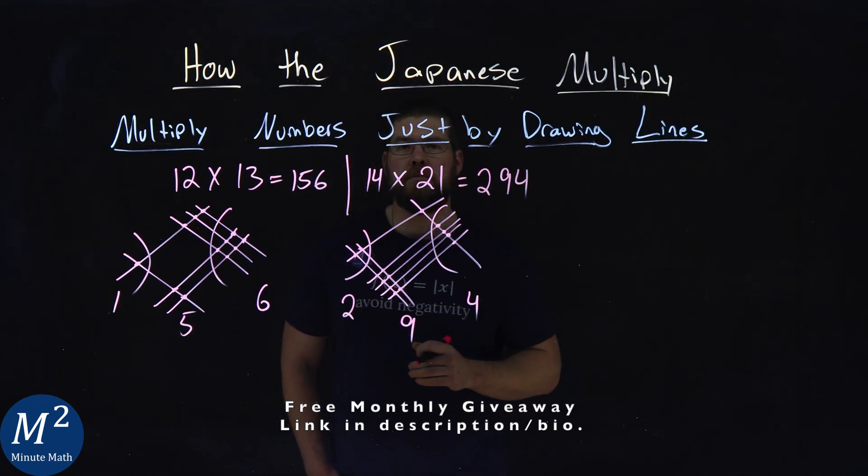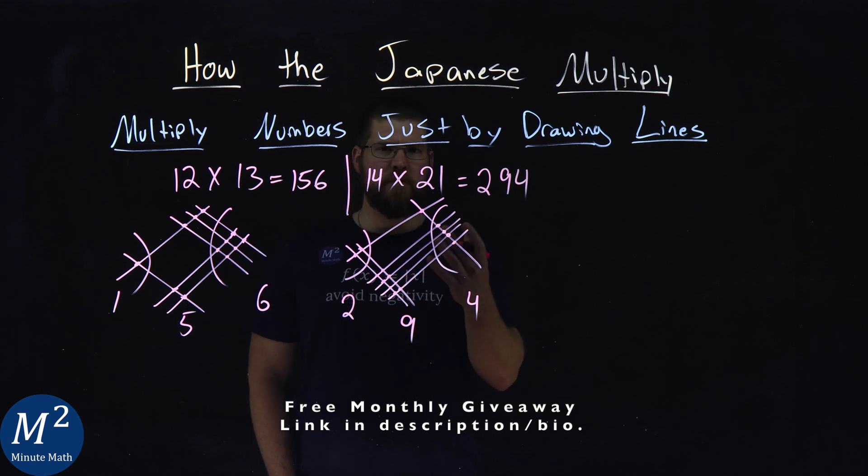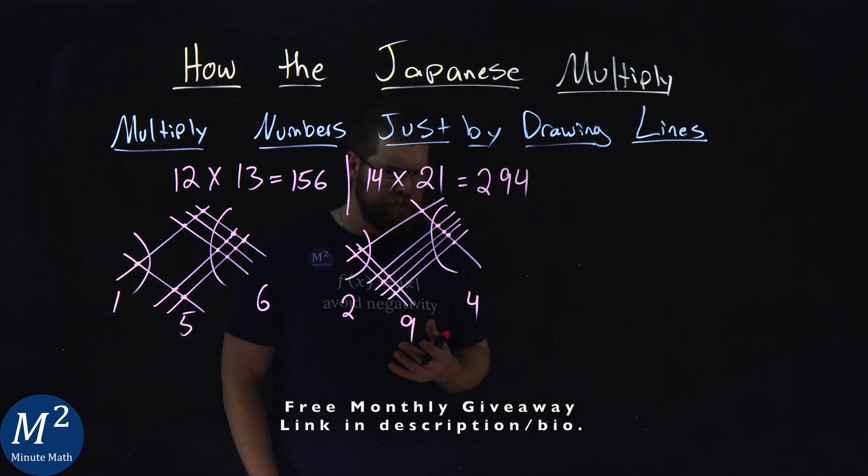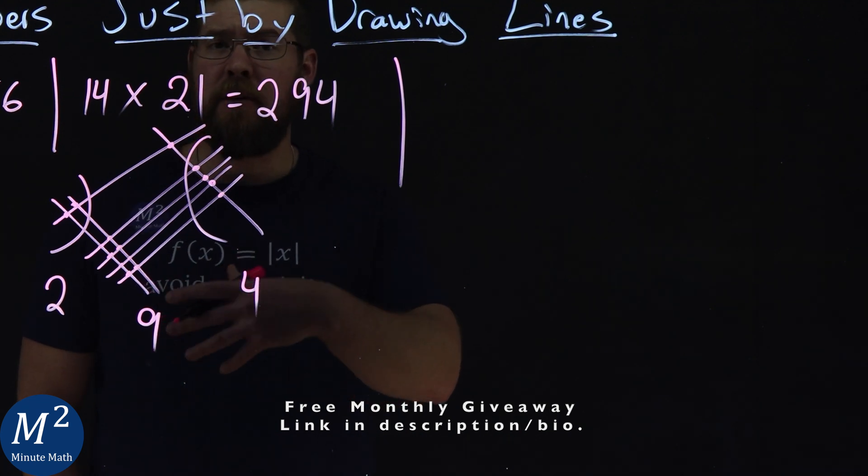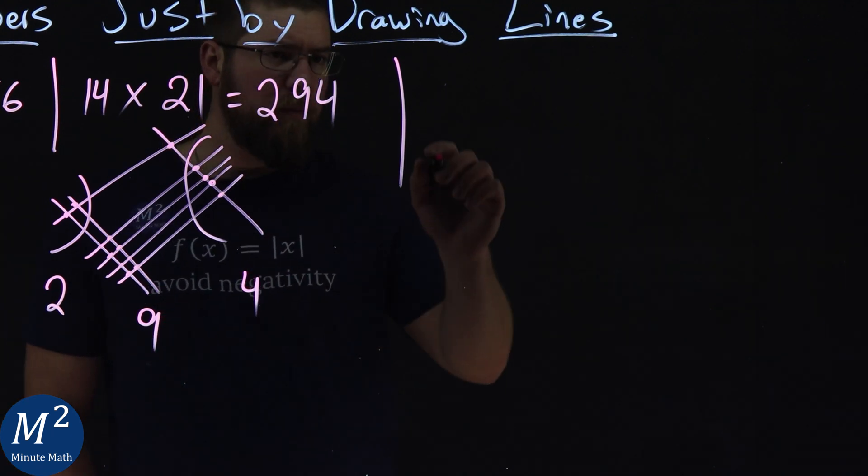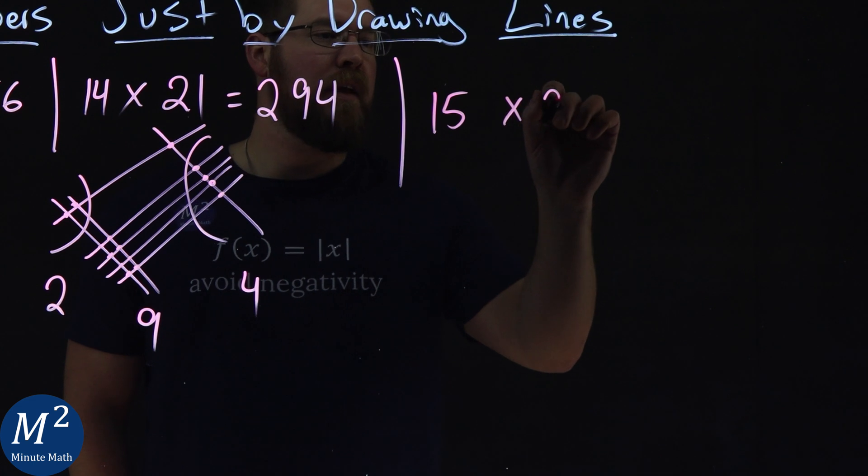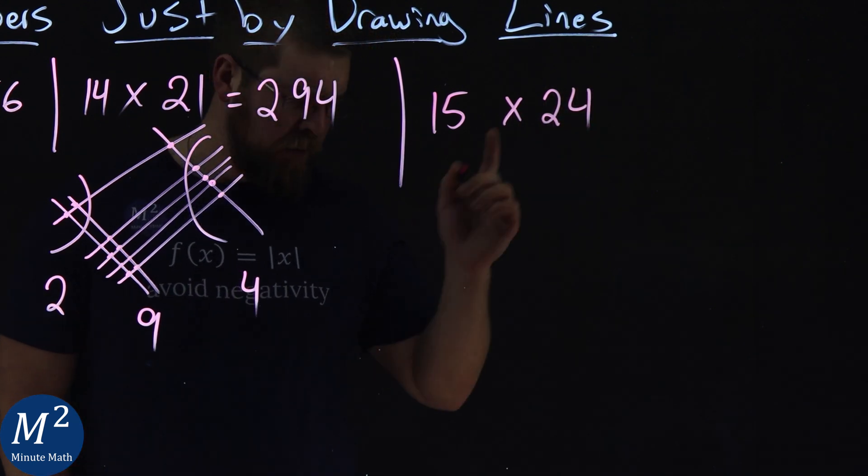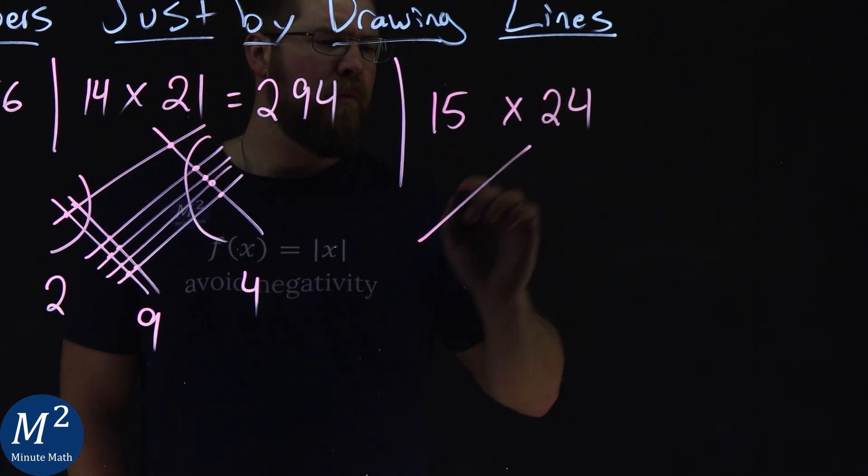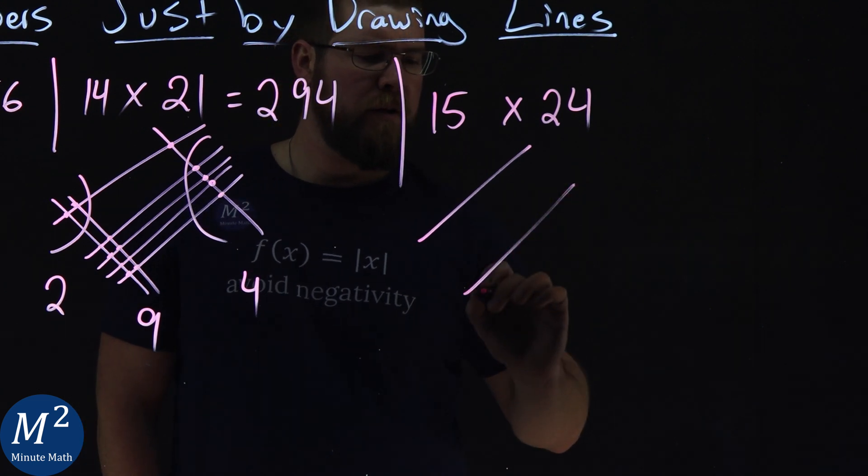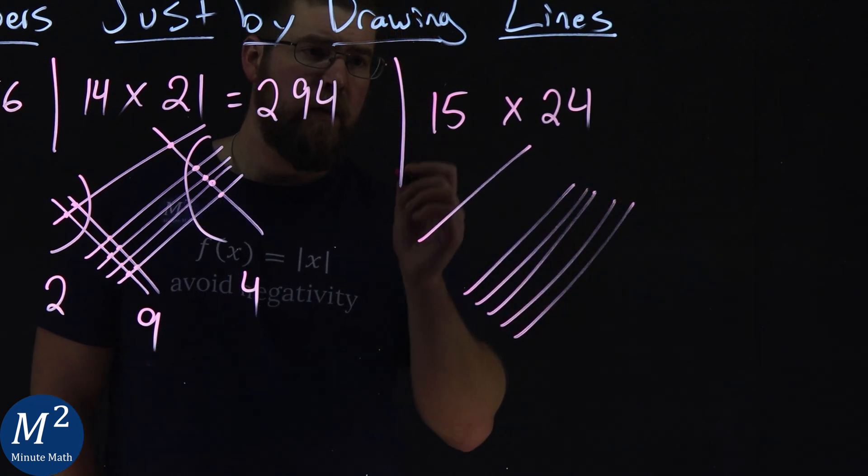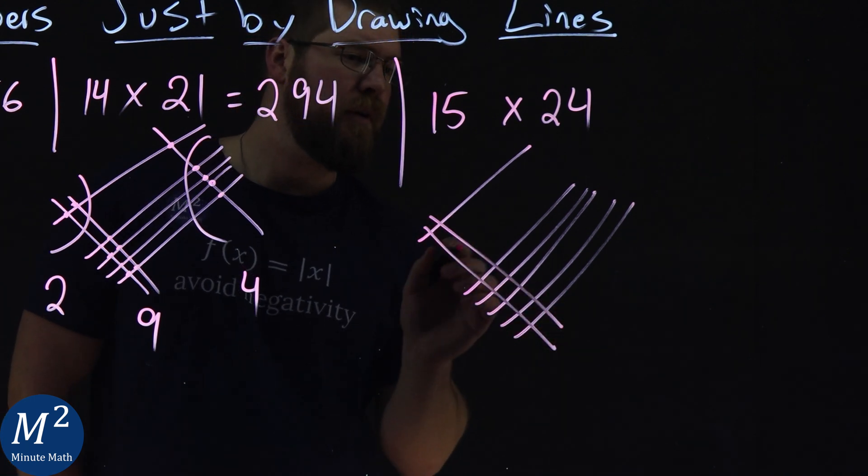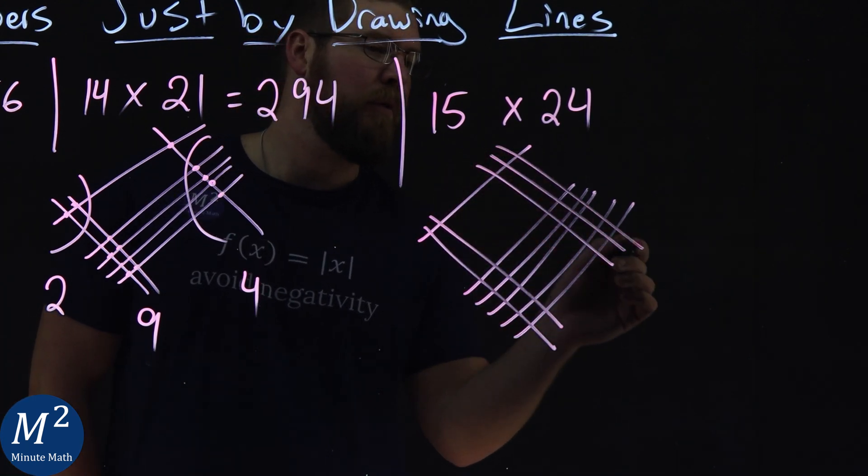Now, notice here in the middle, we almost got to ten. What happens when we could hit a ten? So, now let's go try our problem and see what happens if this nine would become a ten or more. So, let's go multiply 15 times 24. Well, let's set up the problem. One here, and then the five. One, two, three, four, five. Then, from there, one, two. One, two, three, four.